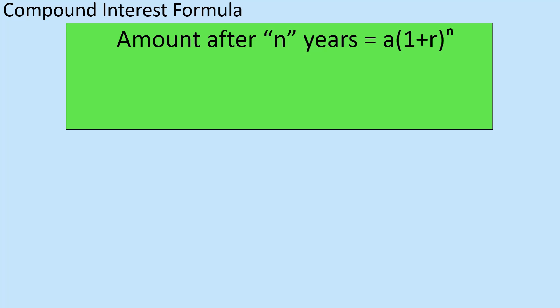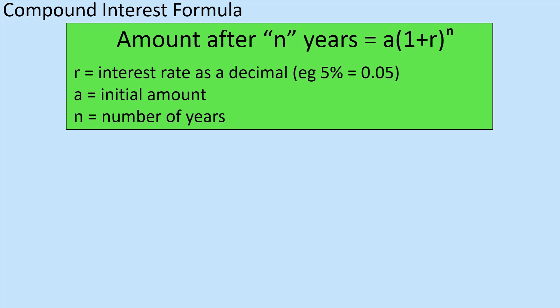There is a formula that goes with compound interest. So A is your initial amount, and you times it by 1 plus R — where R is the interest rate as a decimal. We had 0.05, so 1 plus 0.05. Then raise that to the power of the number of years. So what we did was 200 times 1.05 to the power of 20 in the previous question — that is the formula.